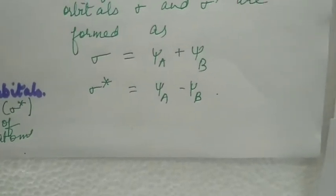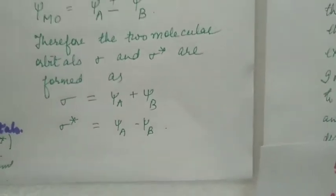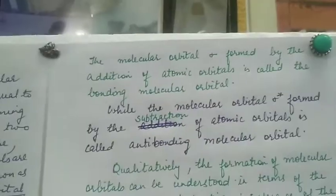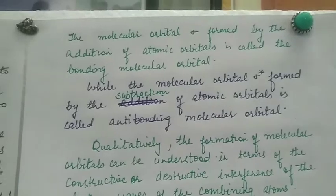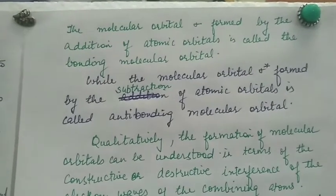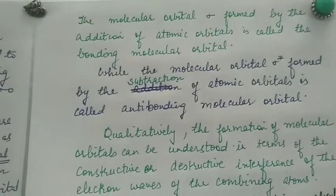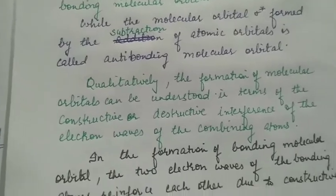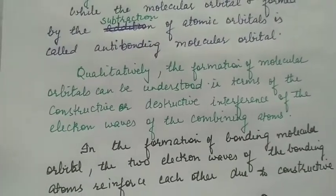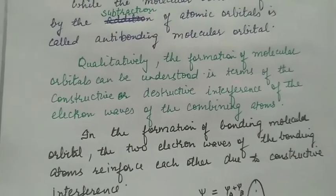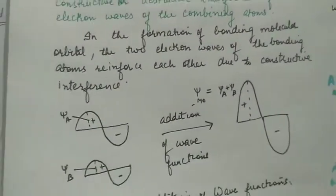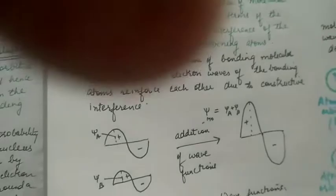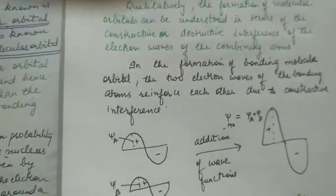Sigma star is formed by subtraction of the wave functions. The molecular orbital sigma formed by the addition of atomic orbitals is called bonding molecular orbital, while the molecular orbital sigma star formed by the subtraction of atomic orbitals is called anti-bonding molecular orbital. Qualitatively, the formation of molecular orbitals can be understood in terms of constructive interference and destructive interference.